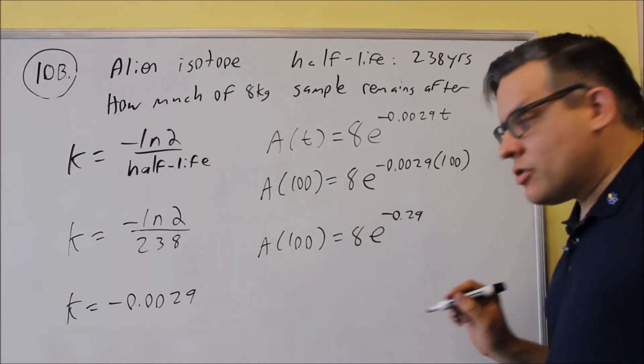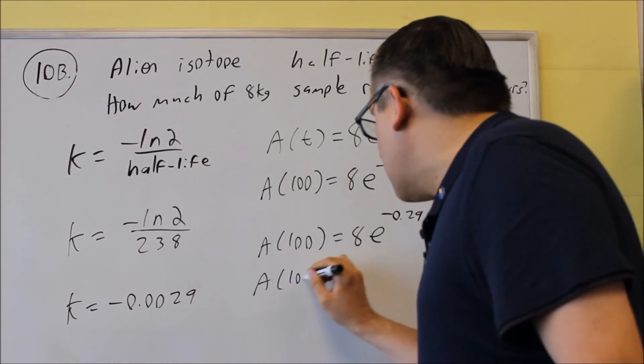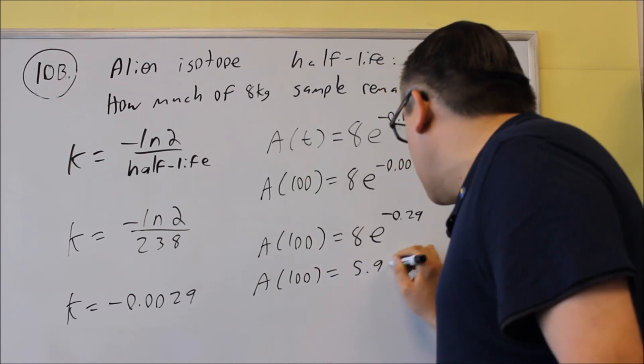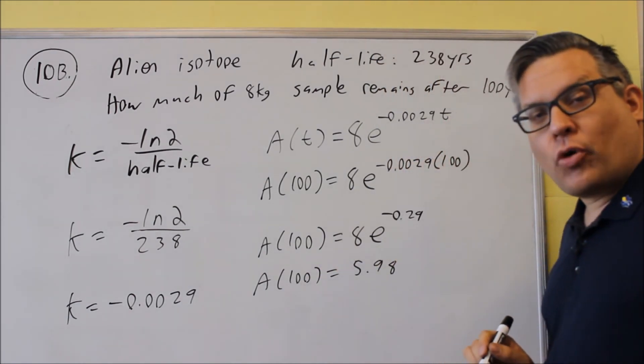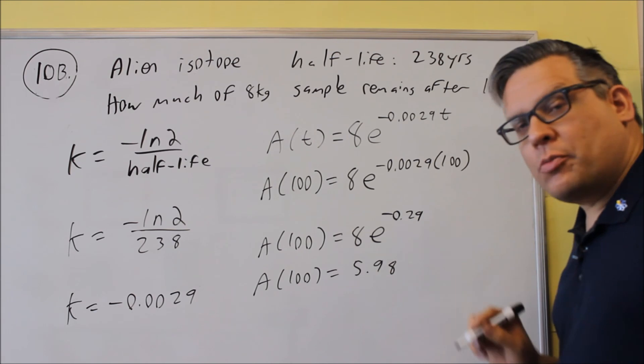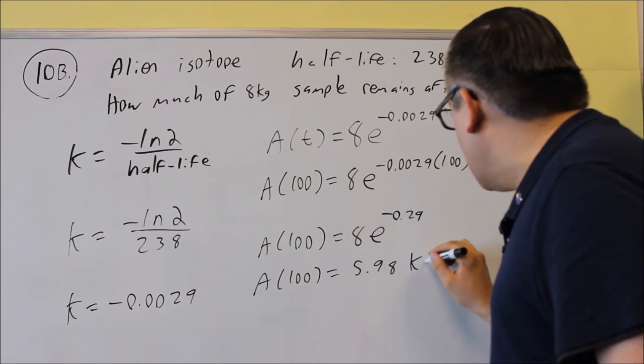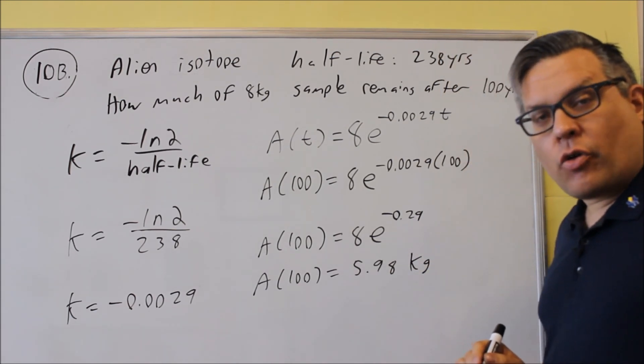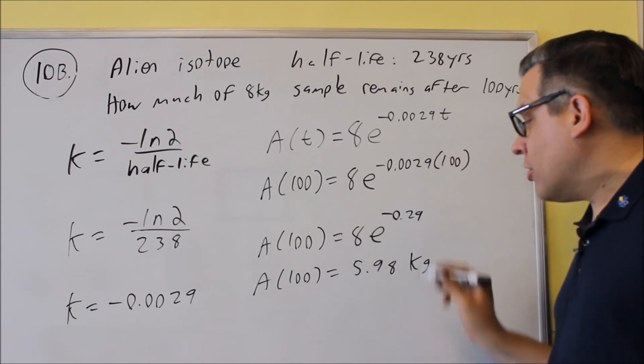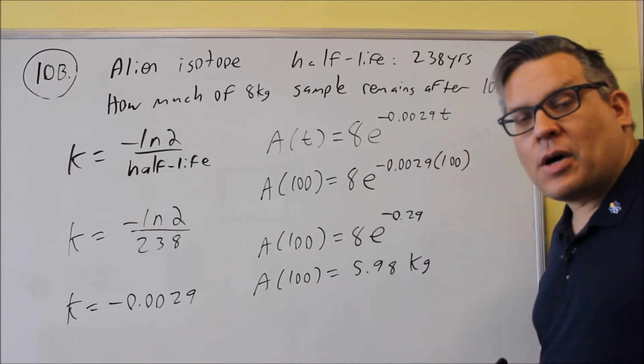We're going to put this into a calculator, and you get about 6. If you round it to two decimal places, it's 5.98. The nearest whole number would be 6. This would be in terms of kilograms. So after 100 years, it would be down to about 6 kilograms.